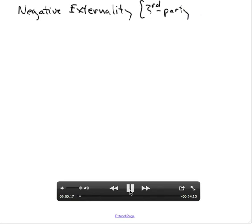Let's look first at the case of a negative externality or a third-party cost. I'll use as the example production of paper.